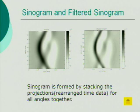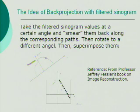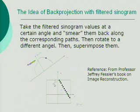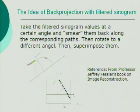On the right is the filtered sinogram after ramp filtering. After we have the sinogram, we can do back projection. The idea of back projection is to take the filtered sinogram value at a certain angle phi, and then smear them back along corresponding paths. There are parallel paths — you smear the data back, then rotate to a different angle, and then superimpose them.